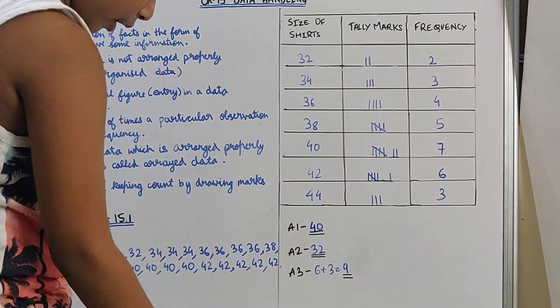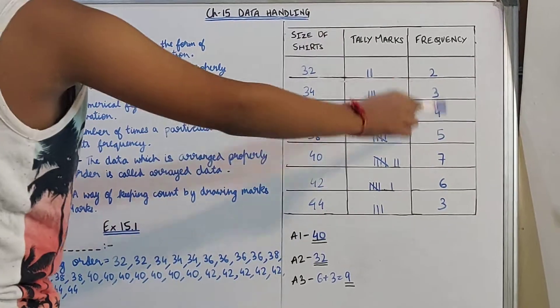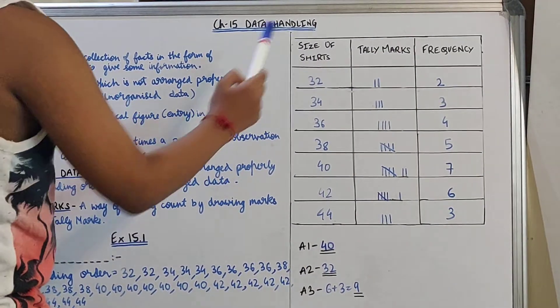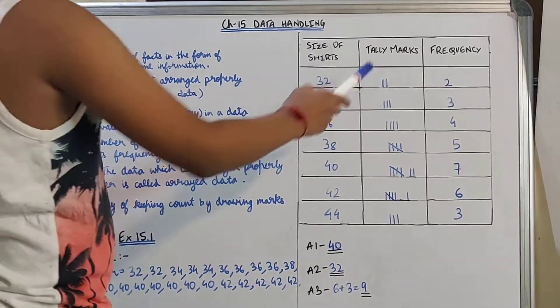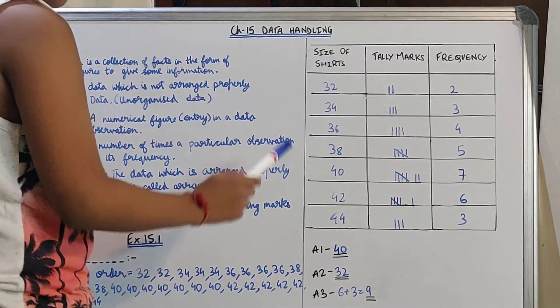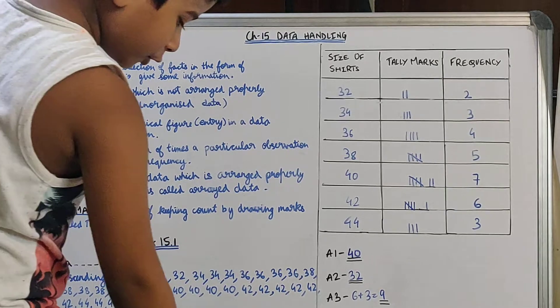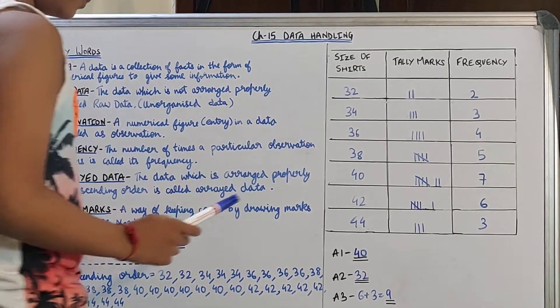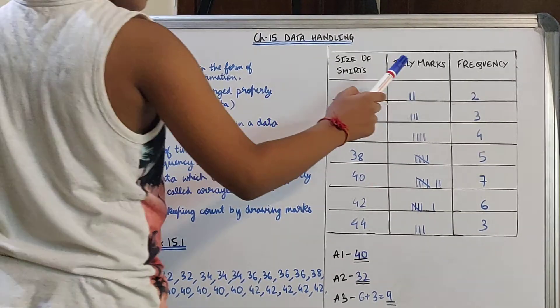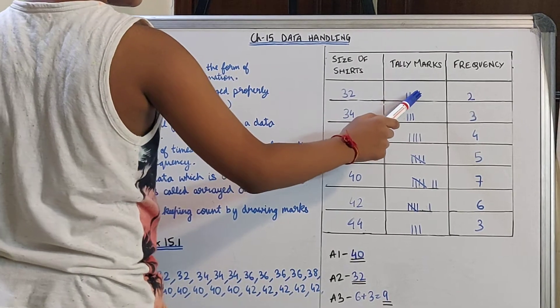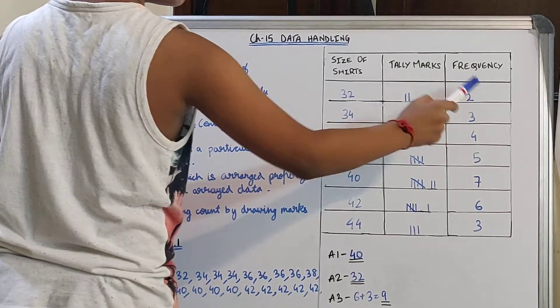Then this is the frequency distribution table I have shown over here. The size of shirts, then tally marks, and then frequency. So the smallest size of shirts is 32. Now we have to make 2 tally marks, then write 2 in the frequency.